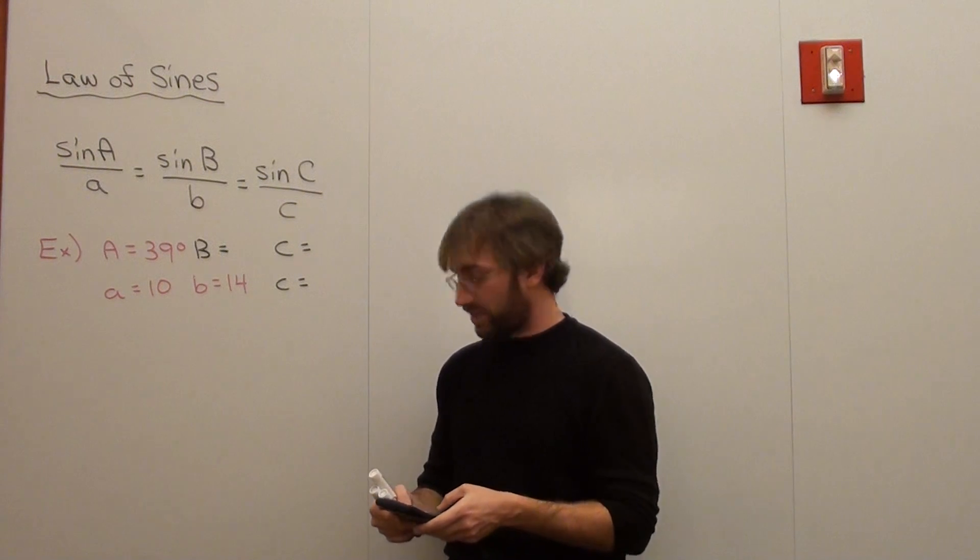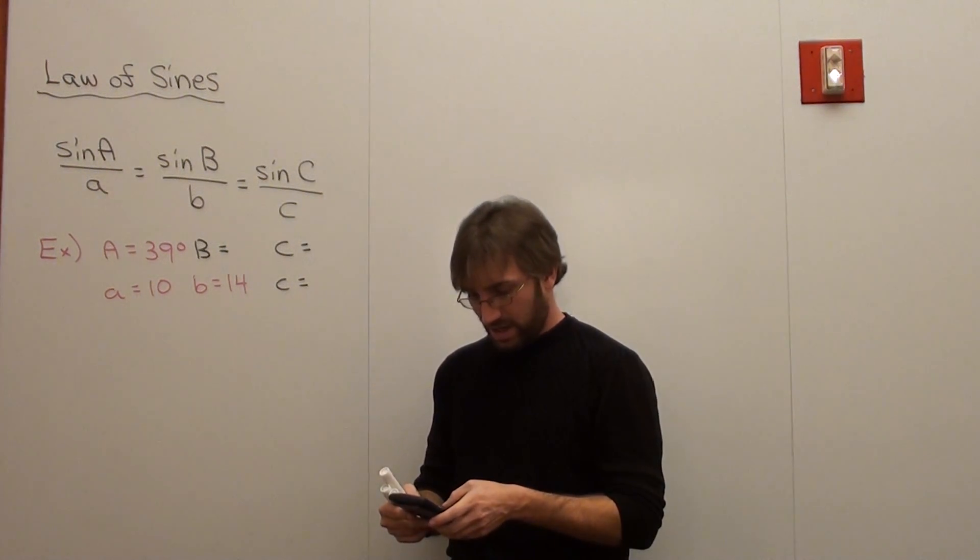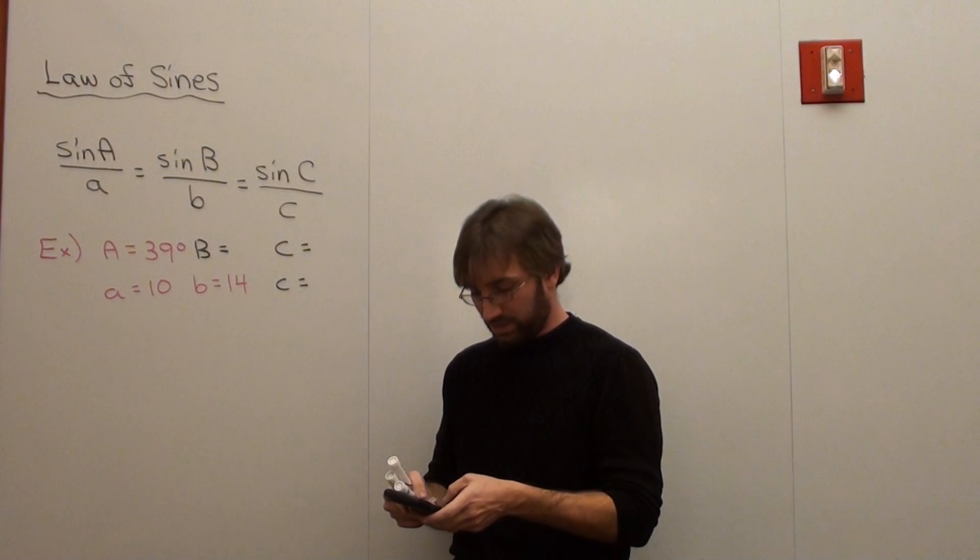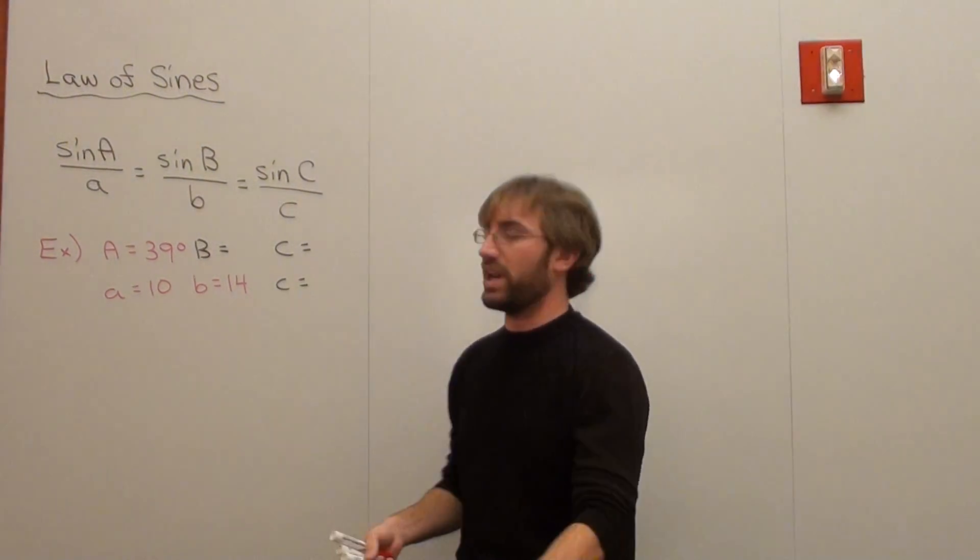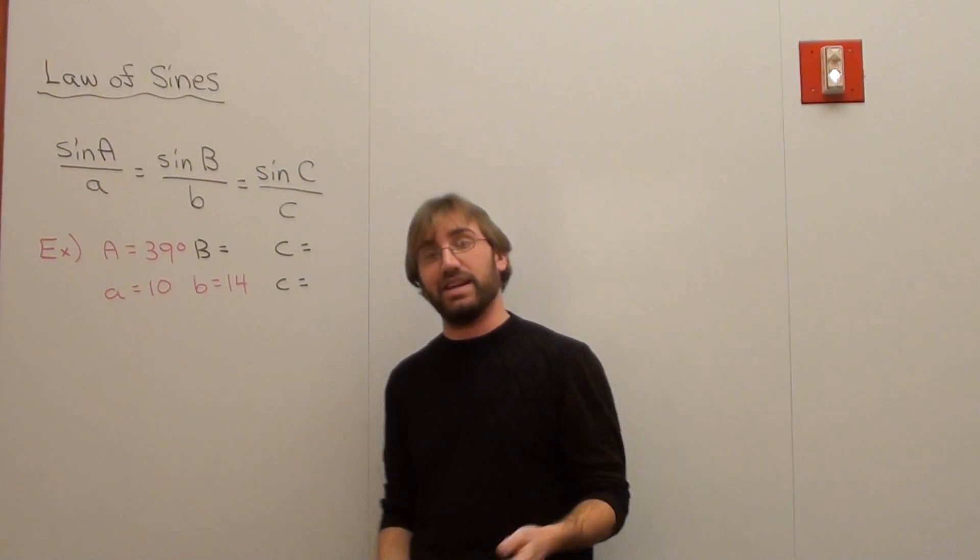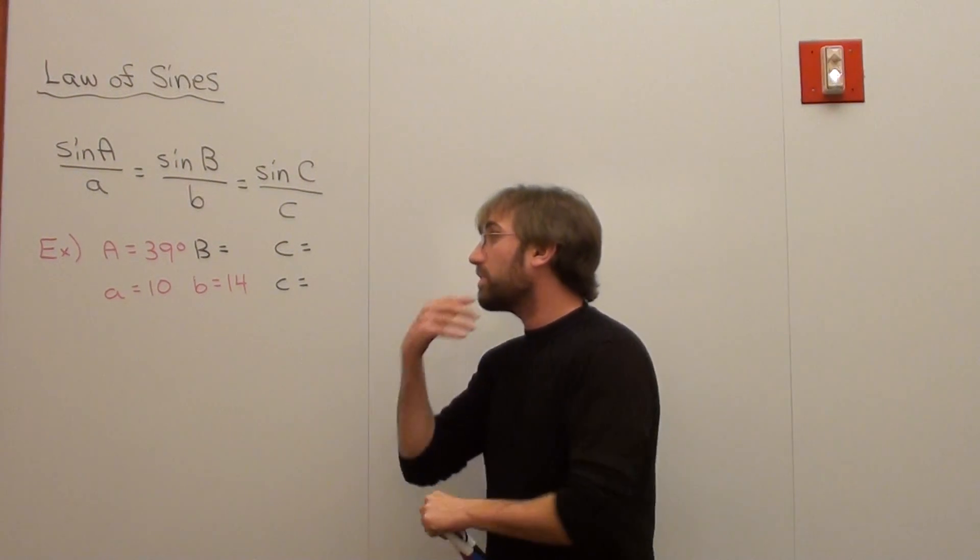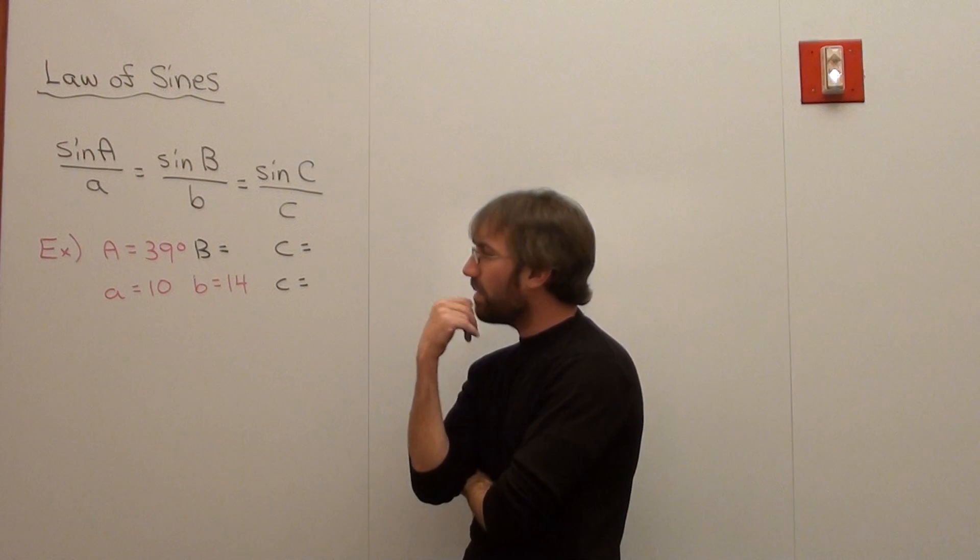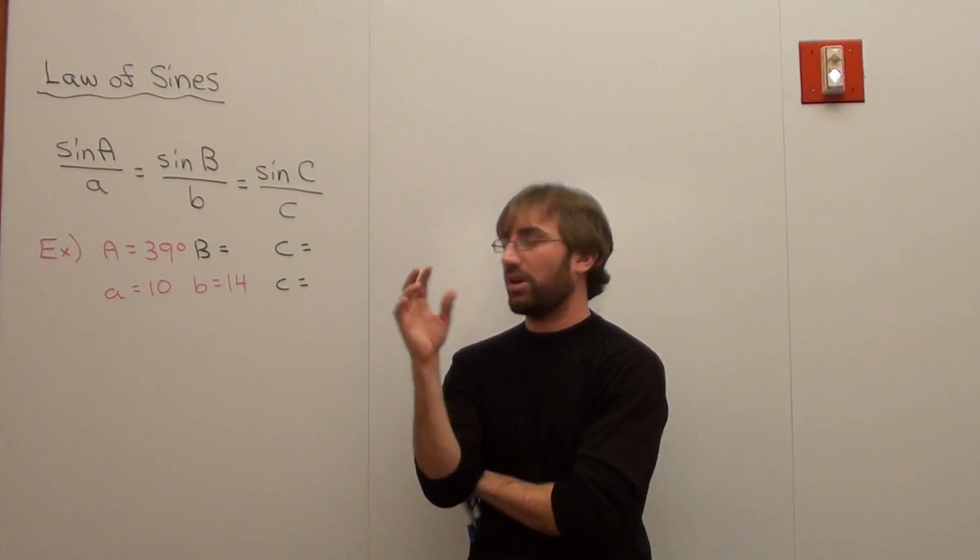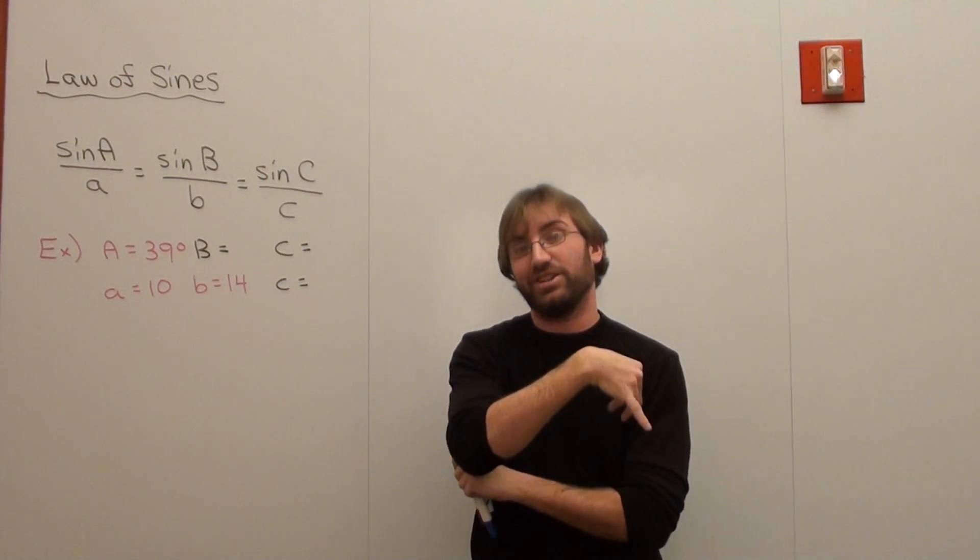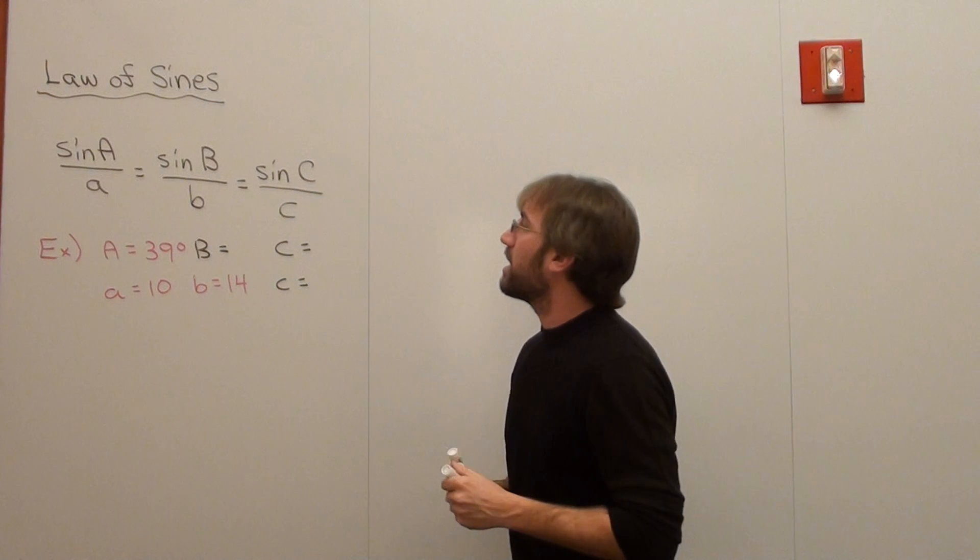Sine of 39 degrees is 0.629. So that's pretty close. Times 14 is like 8.8. And 8.8 is less than 10. So nothing that we really have to work on here. So I'm going to go ahead and do this. I'm not going to draw a triangle yet. Actually, what I want to do is probably split this into two lessons and then draw a triangle afterwards.